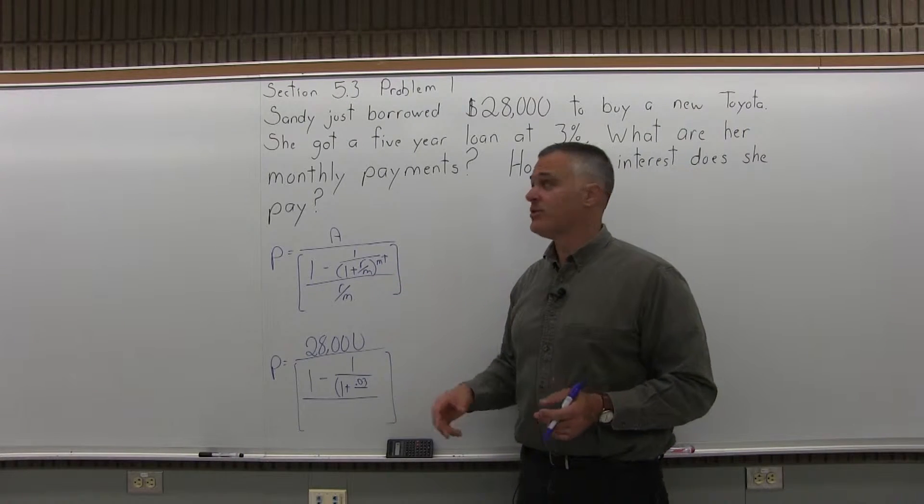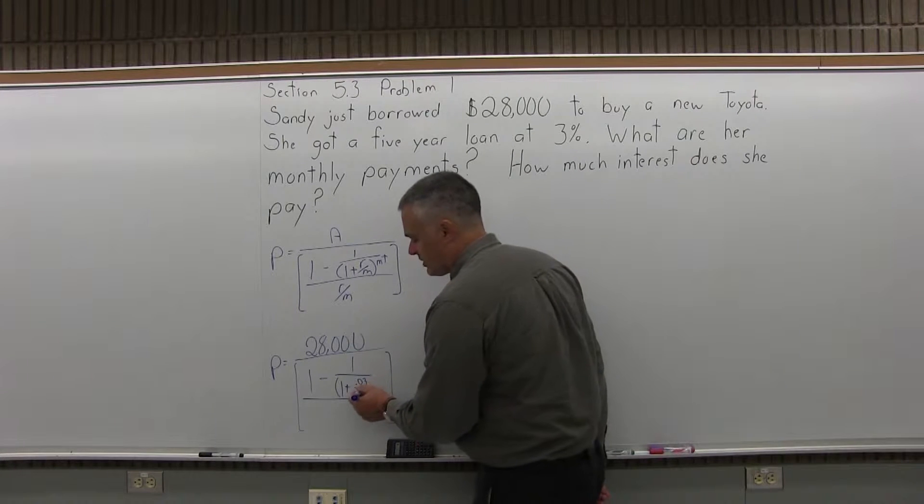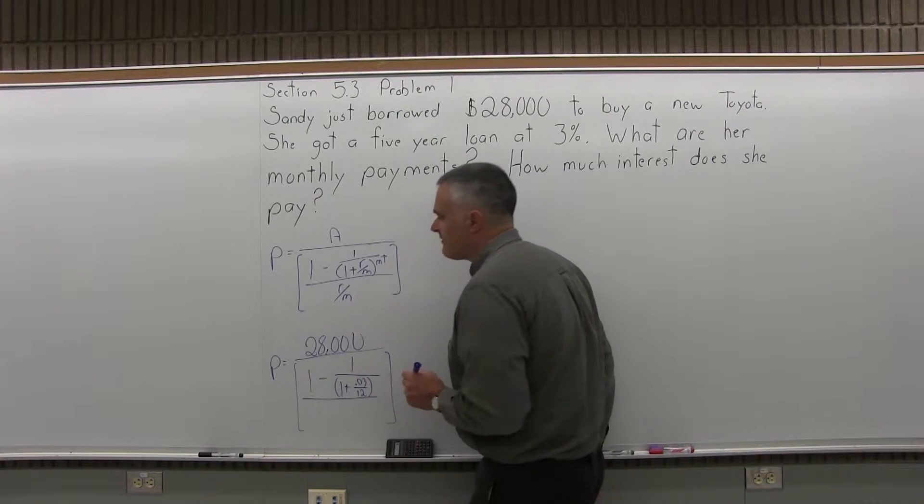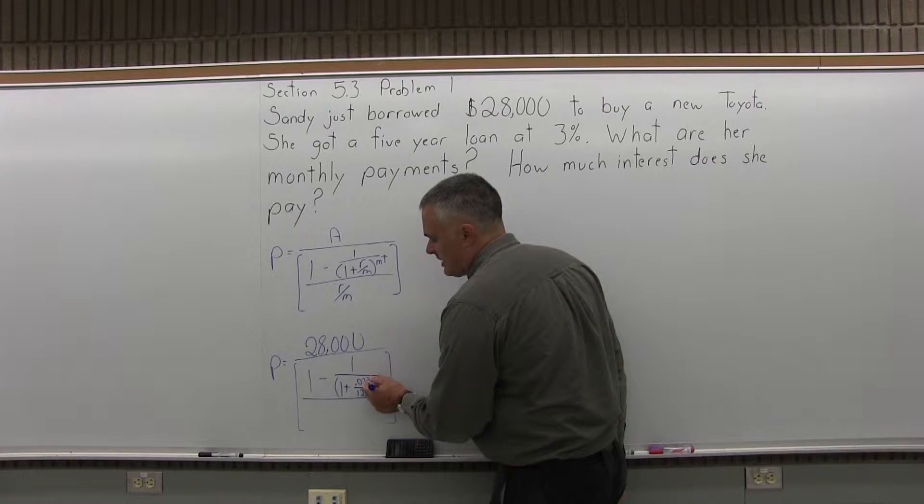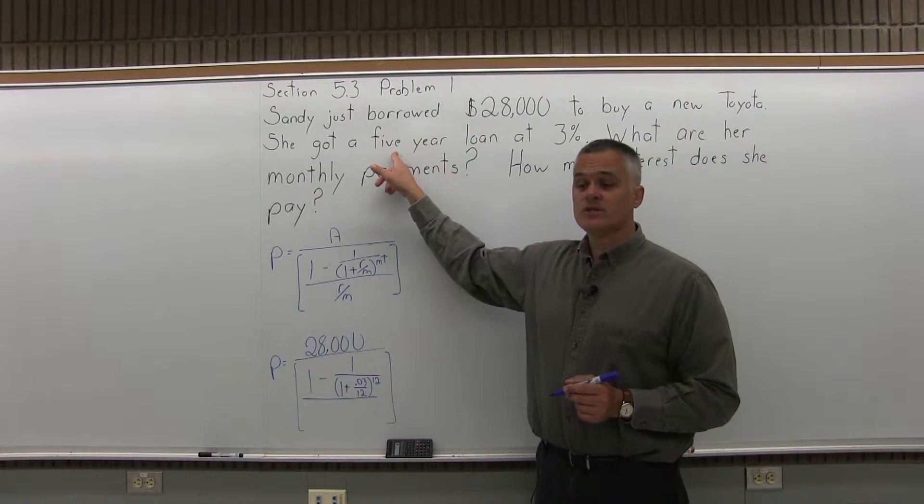For a loan question it's the number of payments you make in a year. This is 12, which is pretty common monthly payments for cars and homes. We close the parentheses. And the parentheses have an exponent of M times T. M again number of payments made in a year. And T number of years. This is a 5 year car loan, which is fairly common.